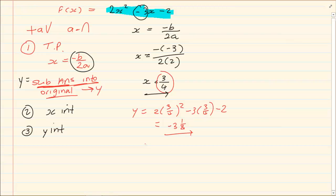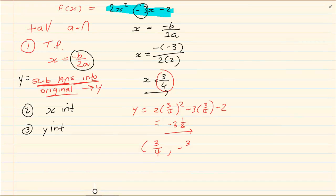Now what is our turning point? Write it down in the form of a coordinate. You must get into the habit of writing down in the form of a coordinate. So we have 3 over 4 and then we have minus 3 and 1 over 8.